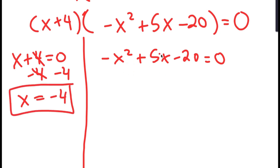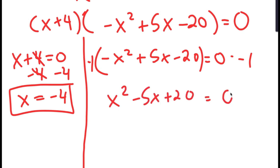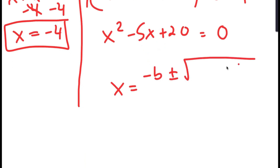For negative x squared plus 5x minus 20 equals 0, I'll multiply both sides by negative 1 to get x squared minus 5x plus 20 equals 0. I'll solve this using the quadratic formula: negative b plus or minus the square root of b squared minus 4ac, all over 2a.